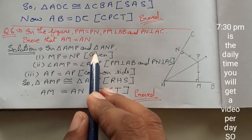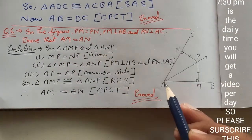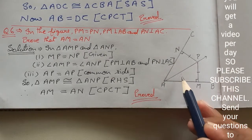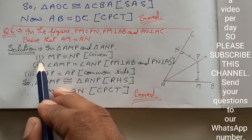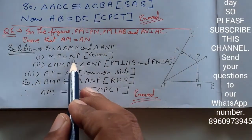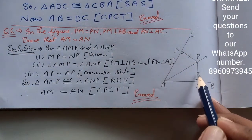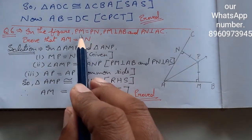In triangle AMP and triangle ANP, these are two triangles here. First, MP equals NP, and this is given in the question.